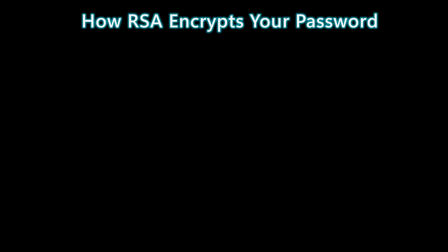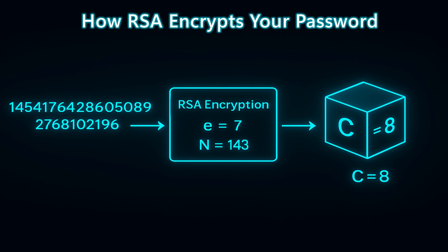Now that we've converted the password into a single large integer, the next step is RSA encryption. RSA doesn't work on characters or strings — it only works on numbers. Your password, once converted, becomes the message integer we feed into the encryption function. To keep the math clear for this demonstration, we're using a simplified RSA public key: the exponent e is 7 and the modulus n is 143. In real systems, n is hundreds or thousands of digits long, but the structure of the math is identical.